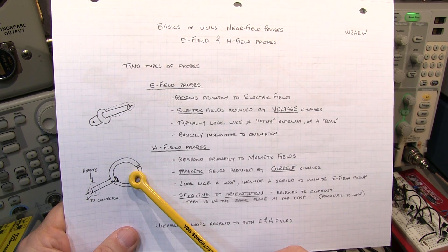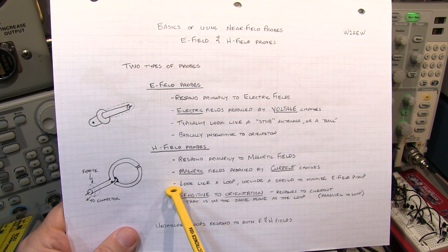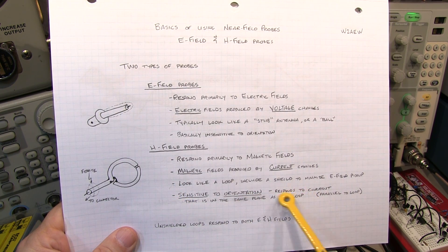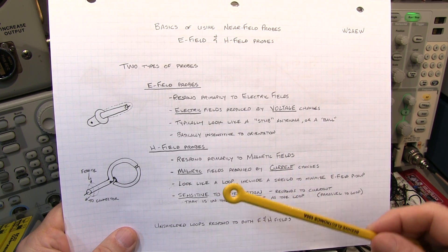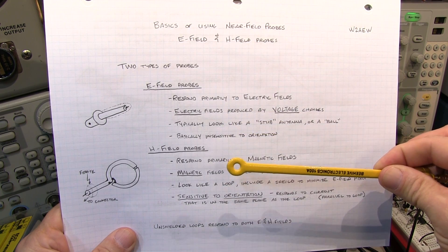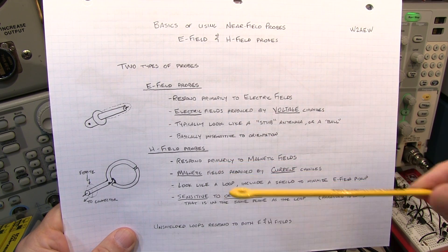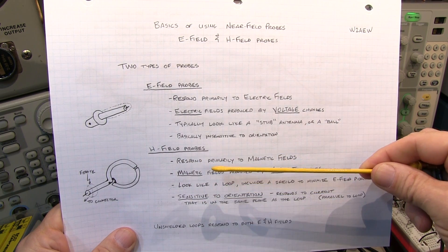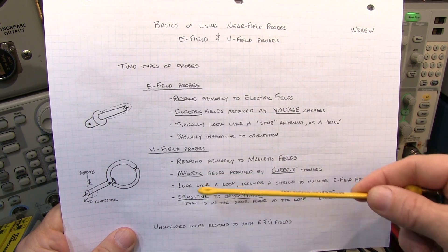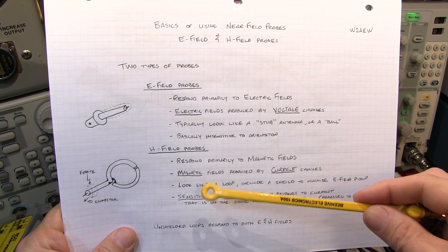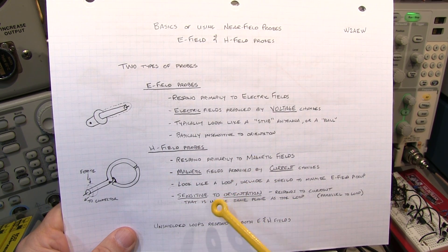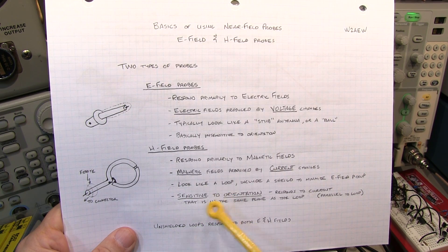Now what's really important with these H field probes is that they are sensitive to the orientation in which you apply them to the circuit under test. They only respond to current that is in the same plane as the loop. So if the loop is kind of flat here, any current flowing in this plane would be fine. But if I turn the loop this way, it would only be current flowing in this plane that would respond to the loop. Current flowing perpendicular to the plane of the loop would not get a response. And this could be very handy to help you identify a particular circuit trace that might be radiating a magnetic field.